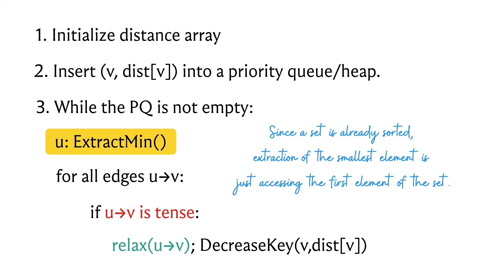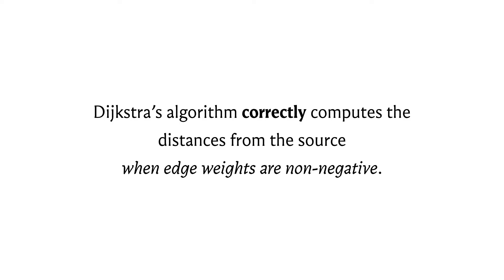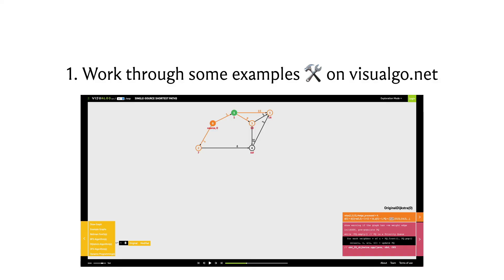This brings us to the end of the description of Dijkstra's algorithm. The algorithm works correctly when all edge weights are non-negative — I'll state this without proof, but I encourage you to try to find examples that break the algorithm when negative edge weights are involved, and identify exactly where it breaks down. To build intuition, play around with examples on visualgo.net, which has an entire module dedicated to SSSP algorithms featuring both Dijkstra and a modified version.